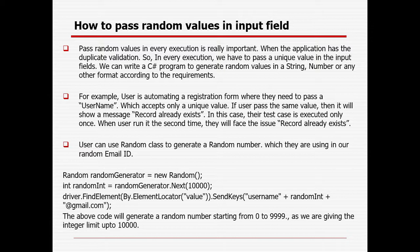Let me give you a real-time example. Suppose you need to log into an application with a different ID and password — if you use the same password, it will throw an error because it already exists. Suppose you need to create a new user ID with details like name, ID, email, and mobile number. You cannot give duplicate values there, otherwise it will throw an error saying it is already existing in the system. When automating a registration form where the username accepts only a unique value, if you pass the same value it will show 'record already exists'. Your test case executes only once successfully, and the second time you run it you will face that issue.